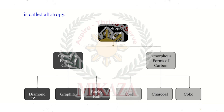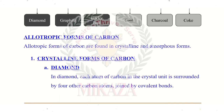In the crystalline form we have three allotropic forms: diamond, graphite, and buckyballs. In the amorphous form we have three: coal, charcoal, and coke. So the total allotropic forms are six. Allotropic forms of carbon are found in crystalline and amorphous forms.